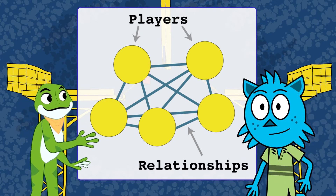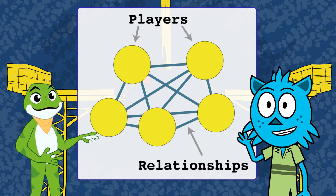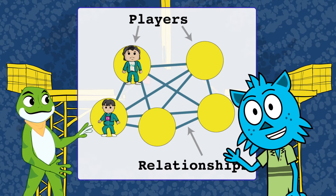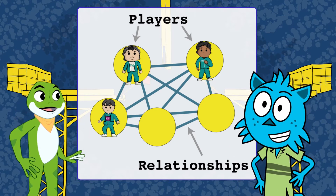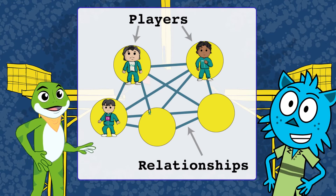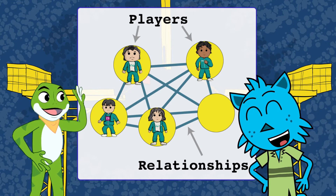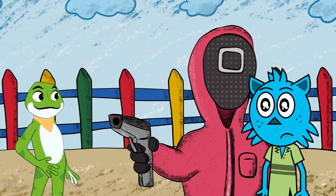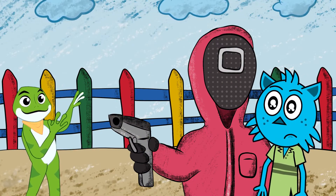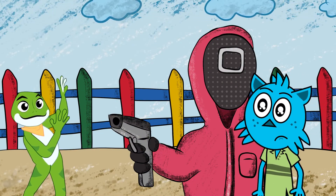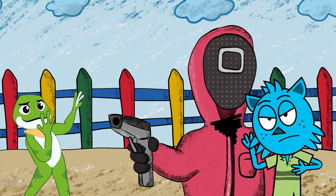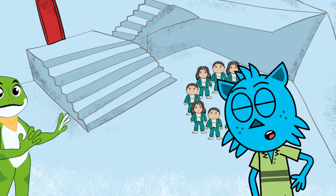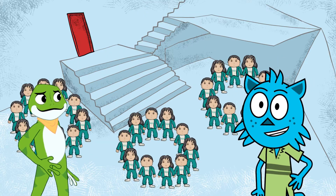That's right Zippy, a social network graph contains dots and lines, whereby the lines connect the dots. So the dots represent the players and the lines represent the relationships. For this game, you will play in teams — please divide yourself into teams of 10 people. Let's use social network analysis to find out how players pick their teams.